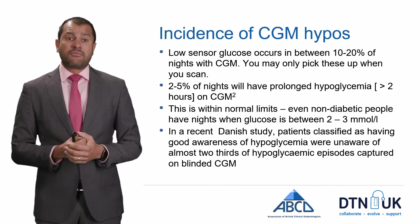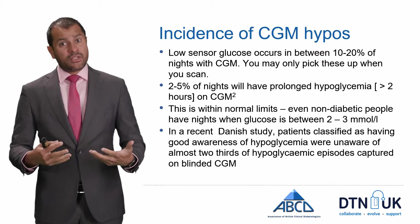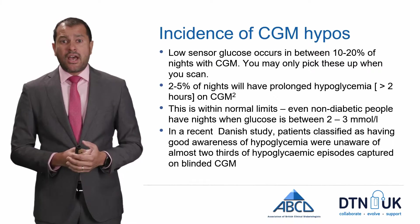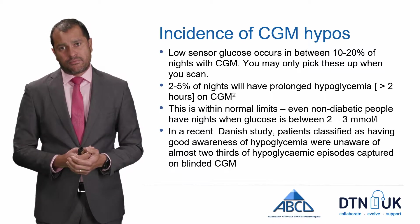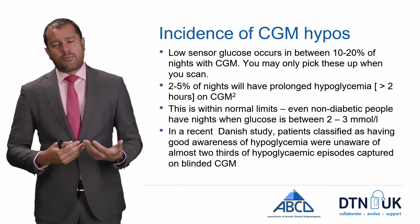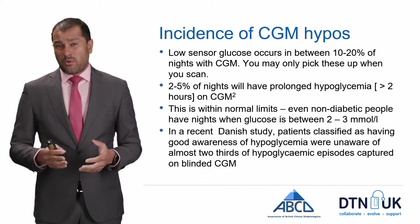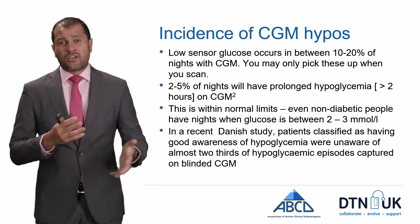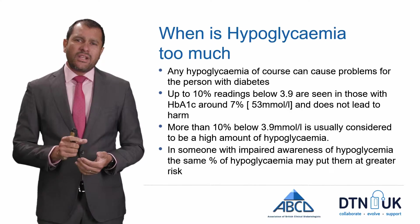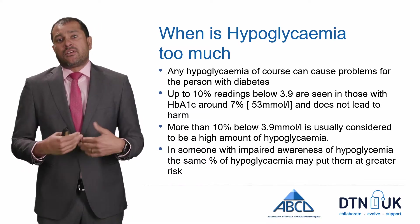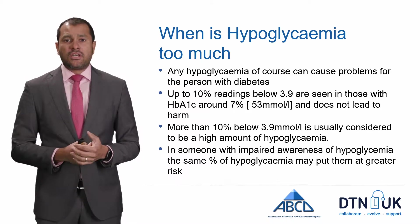In a recent study from Denmark, patients who were known to have very good warning signs of hypoglycemia were unaware of about two-thirds or 60% of their CGM hypoglycemia. So when we've got those CGM hypos we've got to work out which ones are true and which ones aren't, and be aware that we will see some hypos and our job is to try and minimize those. If you're clocking more than 10% of readings below a glucose level of four, that's too much.